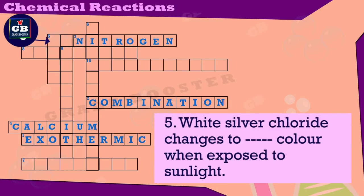White silver chloride changes to what color when exposed to sunlight? Sunlight mein expose hone se white silver chloride ki rang kaisi badalti hai? Answer: gray.